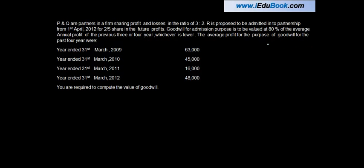P and Q are partners in a firm sharing profits and losses in the ratio of 3 is to 2. So there are two partners P and Q who are sharing profits and losses in the ratio of 3 is to 2.